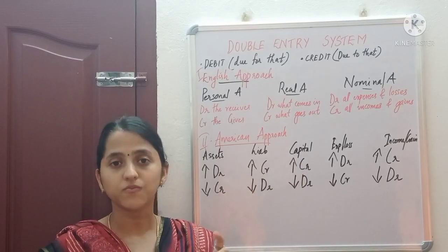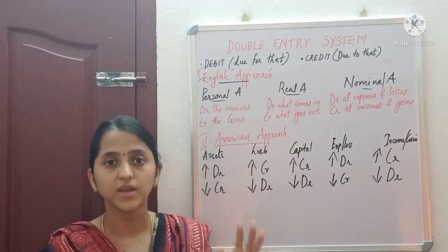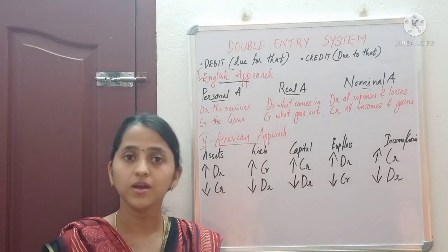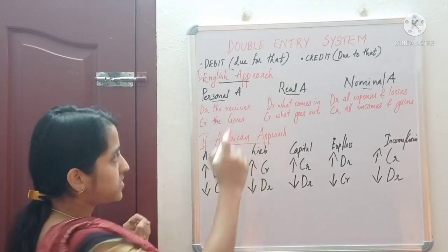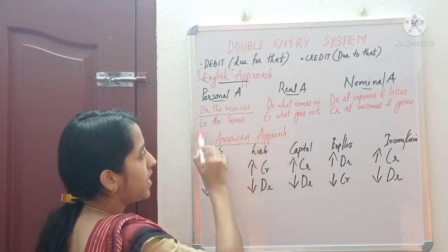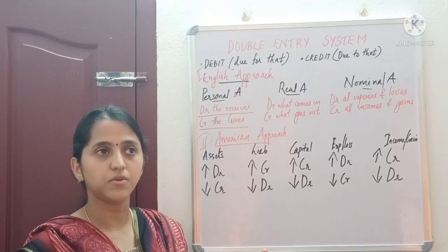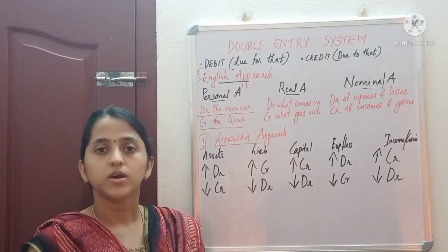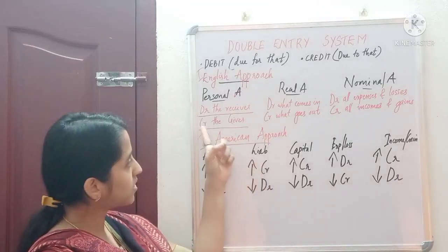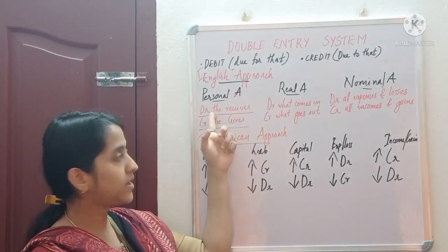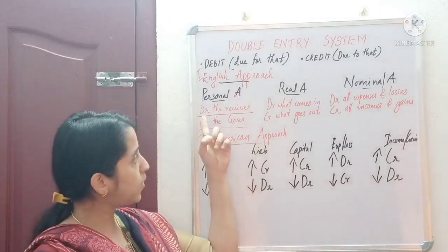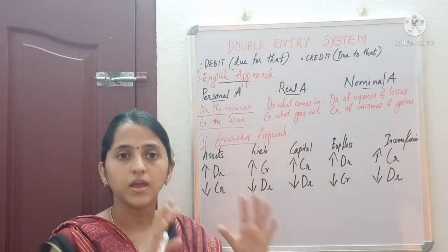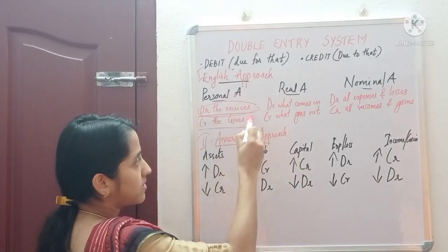While recording a transaction, we must first identify the type of account. If it is a personal account, the rule is: debit the receiver and credit the giver. For example, if Ravi paid 500 to Manu, Ravi is the giver so Ravi's account is credited, and Manu receives the money so Manu's account is debited. The rule for personal account is: debit the receiver and credit the giver.